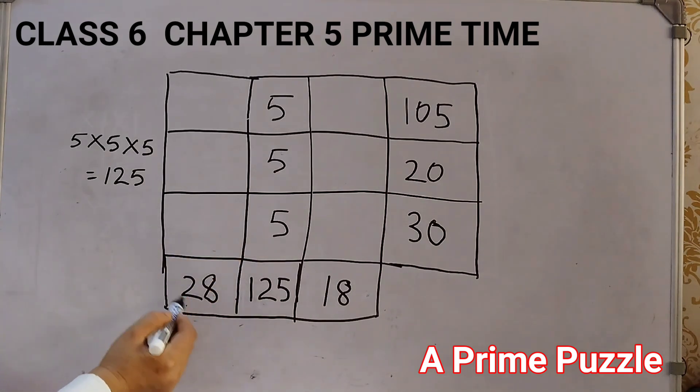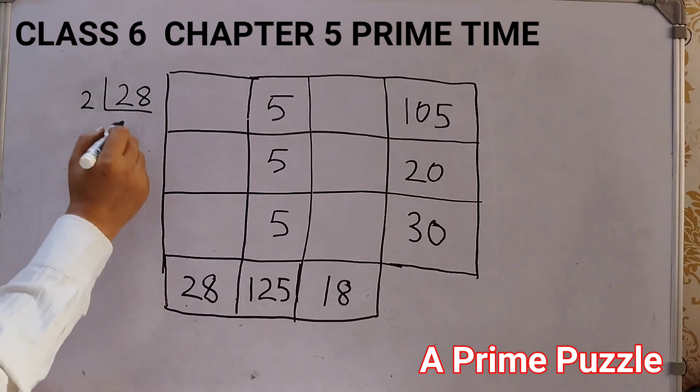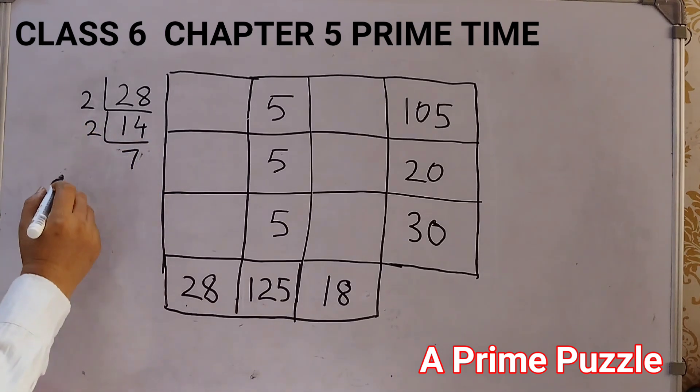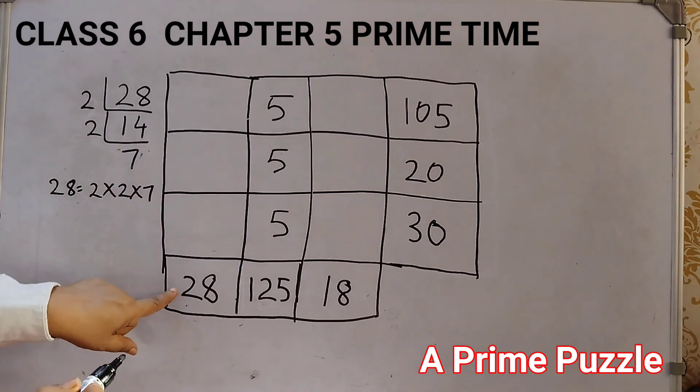Now, we will take this number, 28, and find the prime factors of this. So, 28 first divide by 2. 2 1s are 2, 2 4s are 8, 2 7s are 14. So, 2 2 7. So, for 28, we have 2 into 2 into 7. I have taken this number.